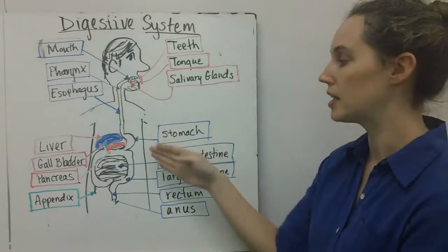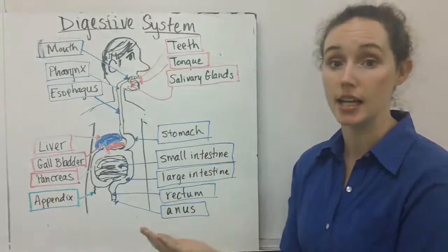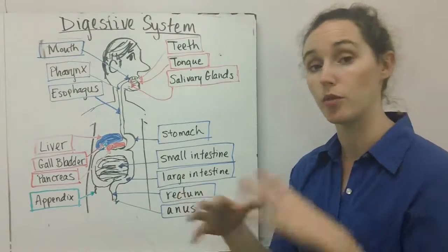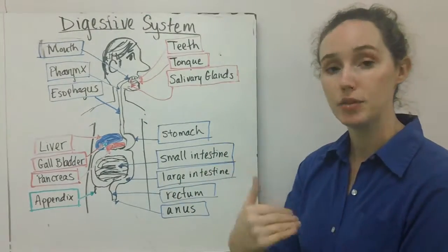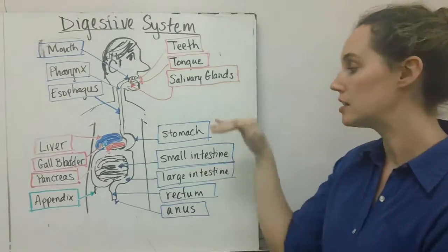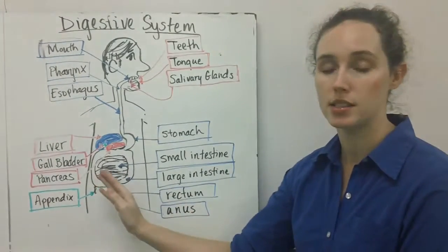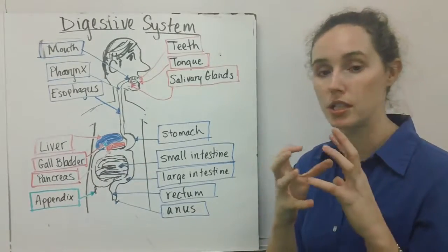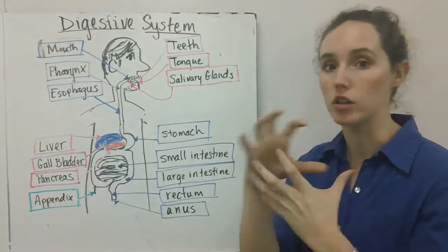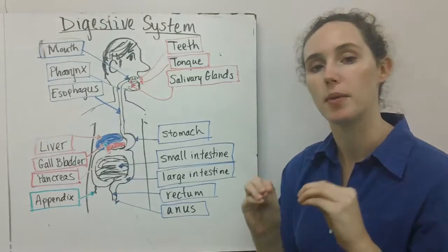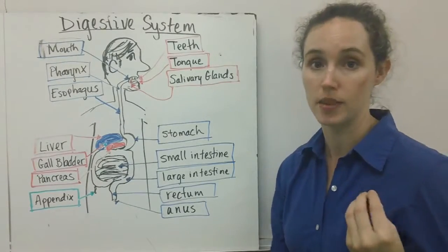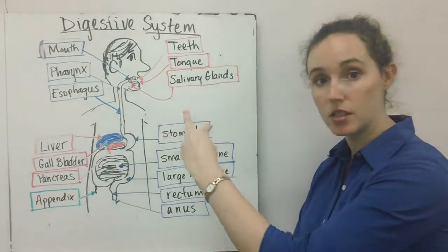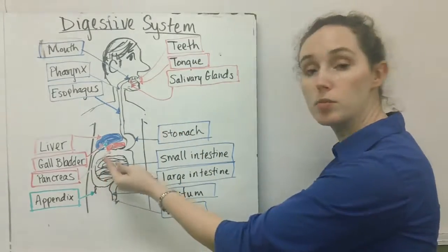Your stomach also physically and chemically digests your food even further with acids. After your food is even more digested, it's going to move into the small intestine. Now the name of this digested food, partially digested food from the stomach and all of its juices, is called chyme.